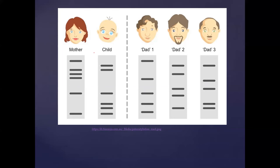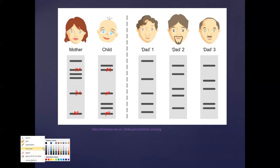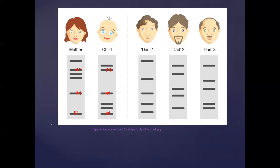To determine paternity, you take a DNA profile from the mother and the child, then look at which bands match with the mother. In this example, the second band of the mother matches with the child, one bar further down matches the mother and child, and the last bar of the mother is also an exact match with the child. After identifying where the mother's bars match the child, all of the remaining bars in the child's profile should match with the father.